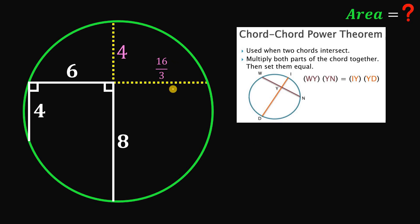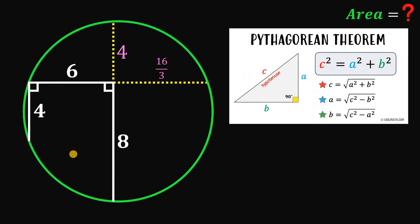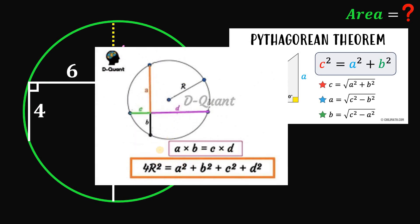From here, using this information we can now find the area of the circle by finding the radius. We have two methods: the first is to use the Pythagorean theorem, or we can use the formula for the radius of a circle given two perpendicular chords: 4r² = a² + b² + c² + d².